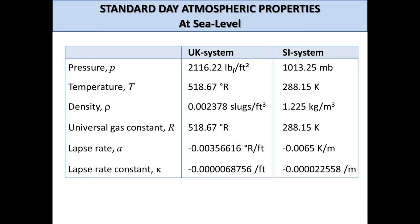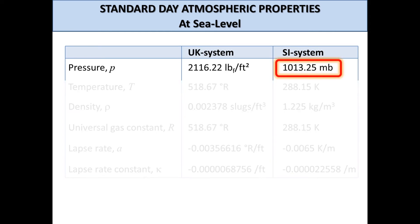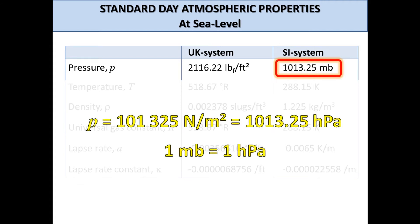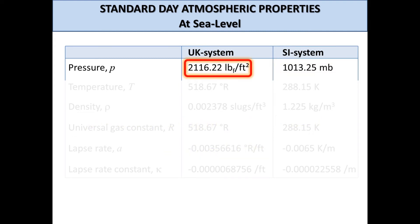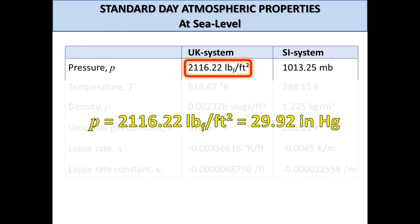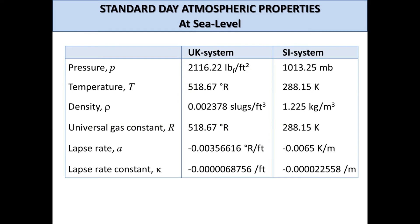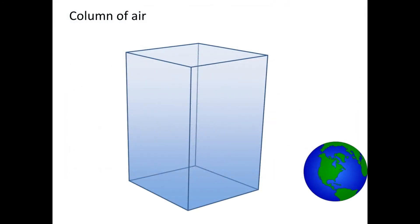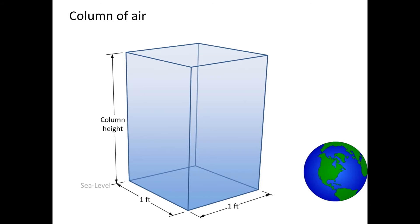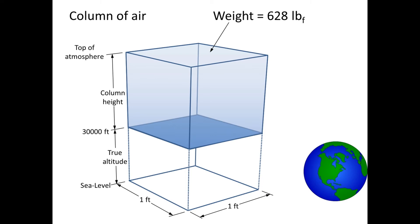Now let's focus on the pressure altitude. First, let's review the properties that constitute a standard day at sea level. A standard day pressure using the metric system is 101,325 newtons per square meter, corresponding to 1013.25 hectopascals, called millibars by meteorologists. In this video, 2116 lbs pressure is our baseline pressure at sea level, which equals 29.92 inches of mercury. This means a column of air one by one foot per side extending from sea level to space weighs 2,116 lbs. As altitude increases, this column gets shorter, so its weight is reduced and this is manifested as a pressure drop. For instance, at 30,000 feet above sea level, the weight of the column of air above has dropped to 628 lbs, giving a pressure of 628 lbs per square foot.